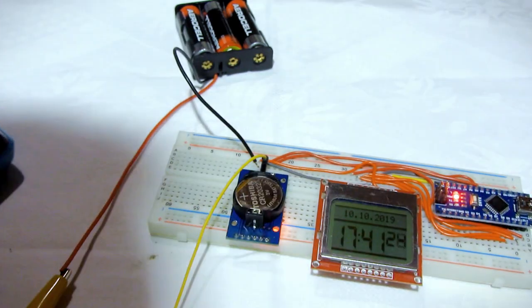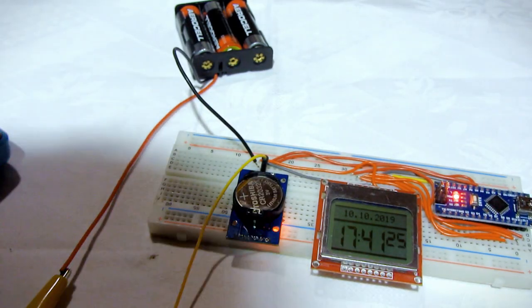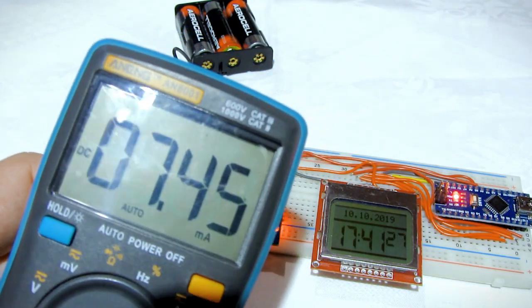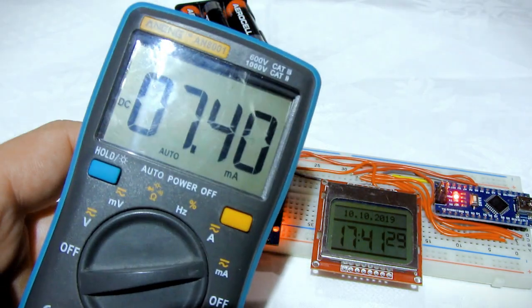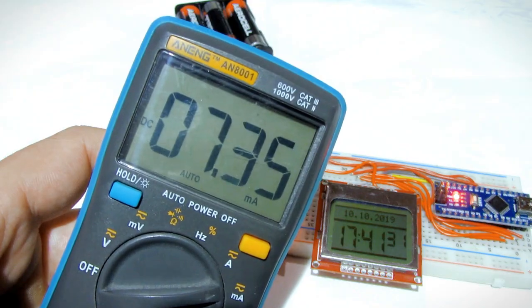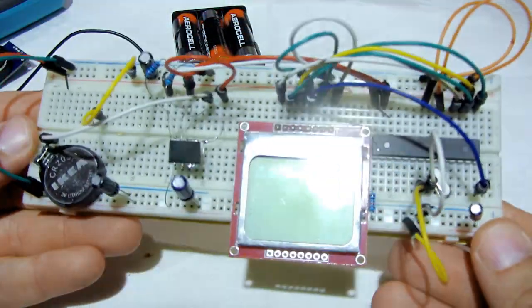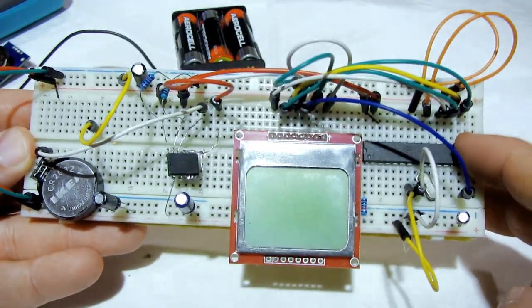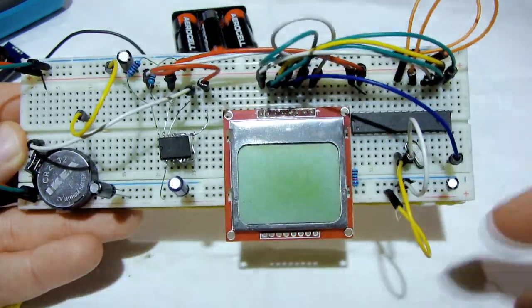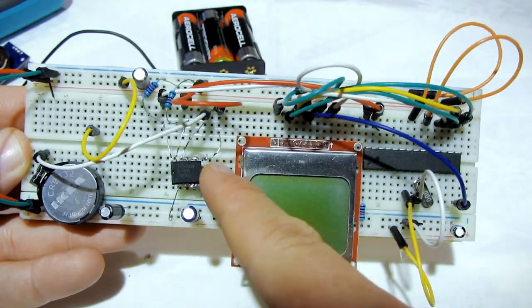So the only solution is to make a standalone microcontroller and real time clock chip on breadboard. And this is the bare minimum project. Instead of Arduino Nano there is an ATmega microcontroller that I took from Arduino Uno.